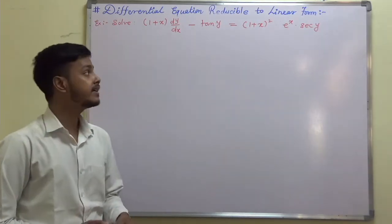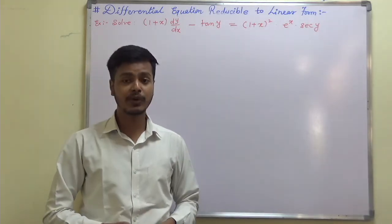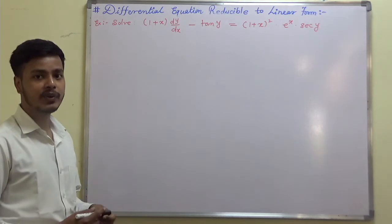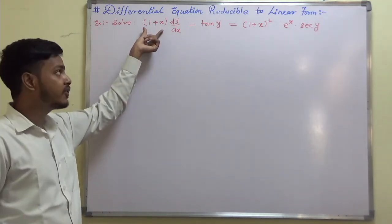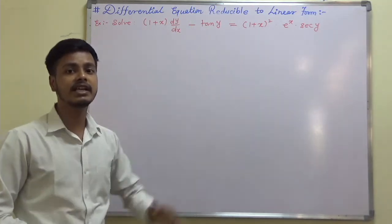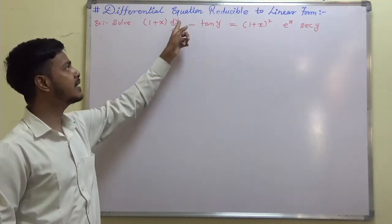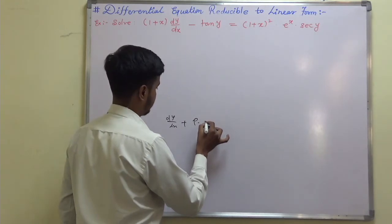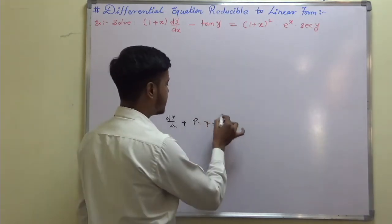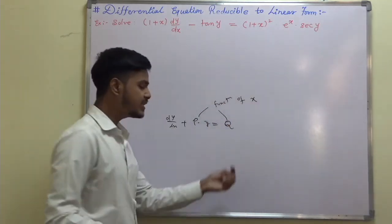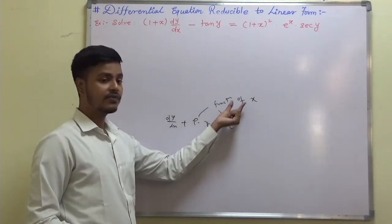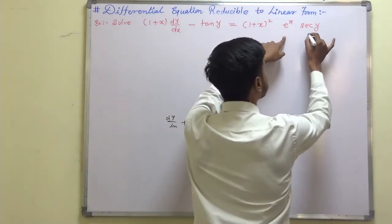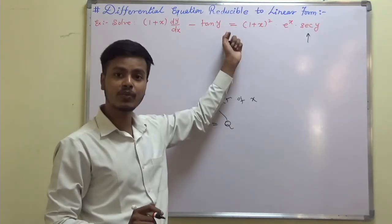We are dealing with the equation reducible to linear form — the another form of Bernoulli's differential equation. If you remember, we need the derivative of the function present here. We need to identify the right-hand side: the functions of x are (1 + x)² and eˣ, and the extra term is sec(y). So we need to divide the equation by sec(y).